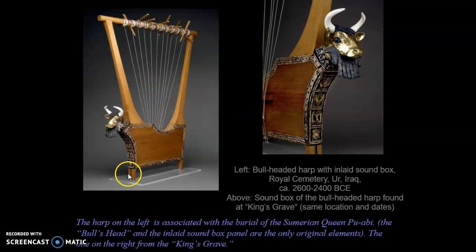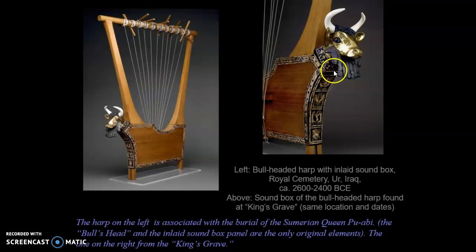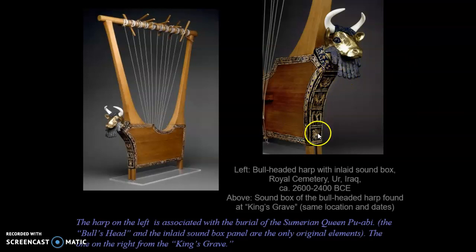The bull is so popular to represent power and authority — that's one interpretation of its presence here. Taking a closer look, you can see the bull's head and the bull's famous horns, which make it the most recognizable animal in that world and in our current world as well. This one has a fun beard made of that very precious stone imported into that part of the world — lapis lazuli, that blue stone. The head of the bull is wooden but coated in gold, again communicating that this is a luxury object.